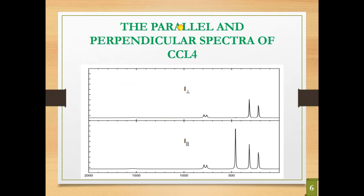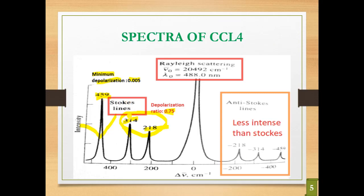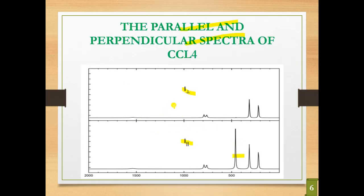Now we will see the parallel and perpendicular spectra of CCl4. In the I parallel spectrum, we are getting 3 lines at 459, 314, and 218 cm⁻¹. But for I perpendicular, we are getting only 2 lines — at 314 and 218 cm⁻¹. This means the 459 cm⁻¹ line is polarized, giving a symmetric vibration, while the 314 and 218 cm⁻¹ lines are depolarized, giving anti-symmetric or asymmetric vibrations. Ultimately, from the depolarization ratio we get information about the Raman lines and their mode of vibration.